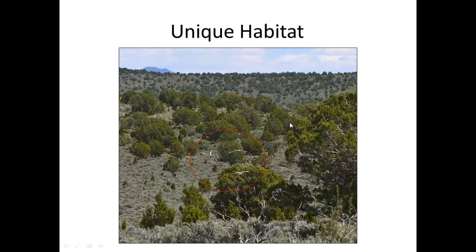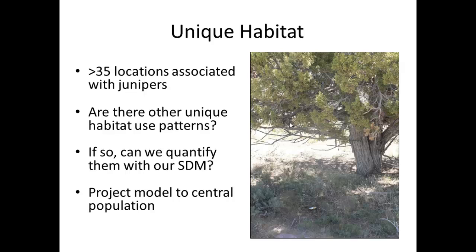The title of this talk is 'unique habitat,' and I want to briefly mention that the birds I'm studying have been found to use juniper, which is not normal for sage-grouse. I've had over 35 locations of radio-collared birds found roosting under or near juniper, and a fecal pile was found at one GPS location. I'm trying to address whether this population has other unique habitat preferences using the species distribution model. If I project my model to a more central population and telemetry points don't match up, that could mean the model is overfit — or it could mean there are actual differences on the landscape that this population is selecting for.